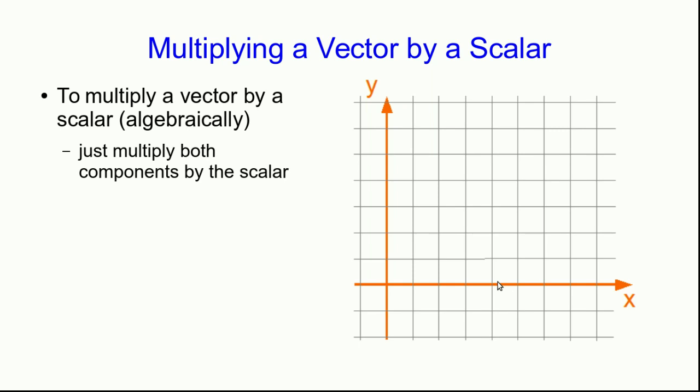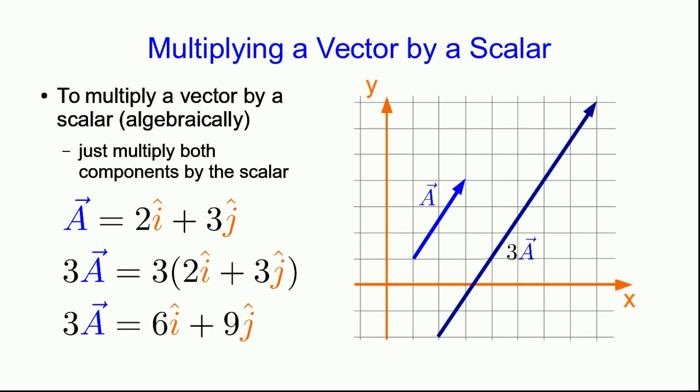Multiplying a vector by a scalar algebraically is even easier than adding. You just multiply both components by the scalar. So for example if we start with this vector a and we multiply it by 3 we're just going to multiply the x component by 3 to get 6 and the y component by 3 to get 9. And as we expect from our graphical intuition about this process we get a vector that points in the same direction as the original one and is three times as long.